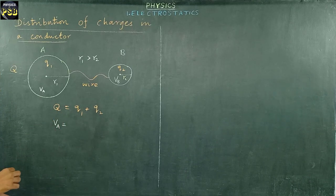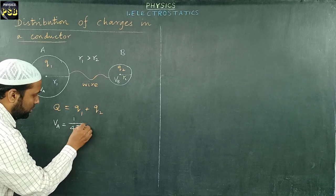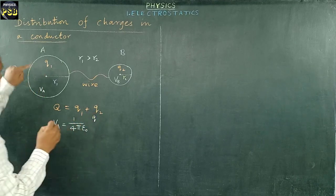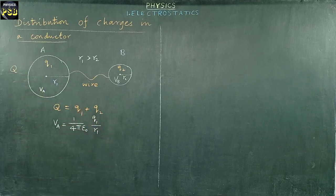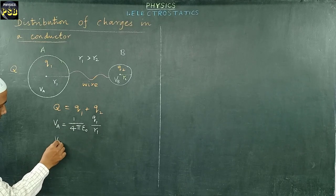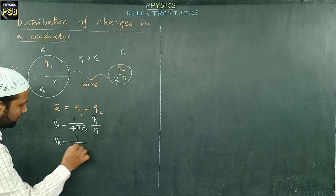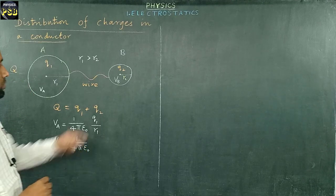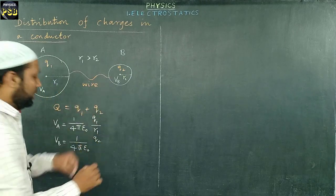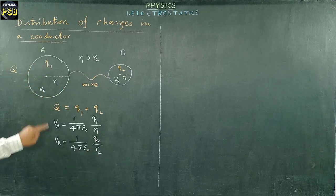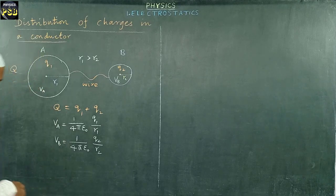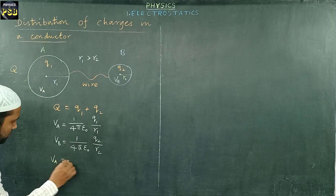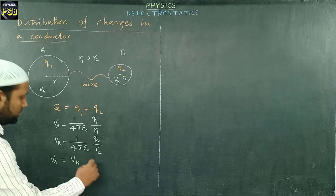VA is written as 1/(4πε₀) × Q1/R1. VB is similarly written as 1/(4πε₀) × Q2/R2. Since the two conductors attain equal potential, VA equals VB — this is called equal potential.